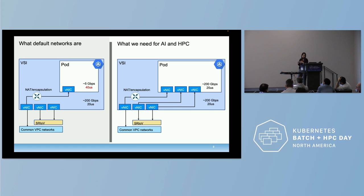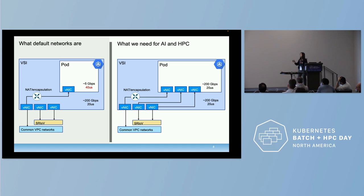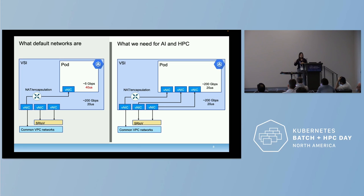What we need for AI and HPC is — we can leave the primary interface for the control plane, but we need to bring secondary interfaces attached to the high-speed networks and connect them directly to the pod, so that we can have the same throughput and same latency that we have at the instance level.